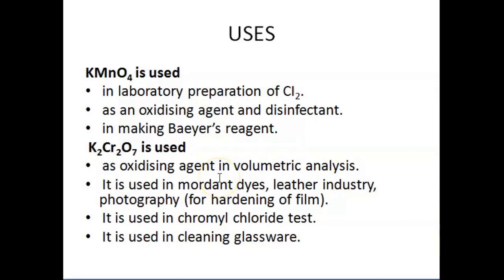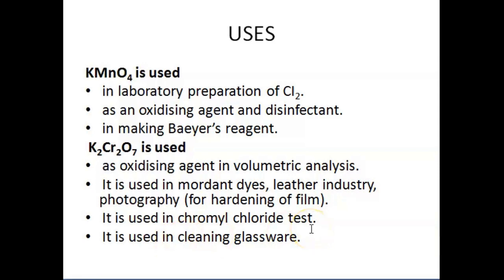Regarding the uses of KMnO4: it is used in the laboratory preparation of chlorine, as an oxidizing agent and disinfectant, and most importantly for making Baeyer's reagent. For potassium dichromate, it is used as an oxidizing agent in volumetric analysis, in mordant dyes, in the leather industry, in photography for hardening of film, in the chromyl chloride test, and for cleaning glassware. Each compound of transition elements has its own specific applications.